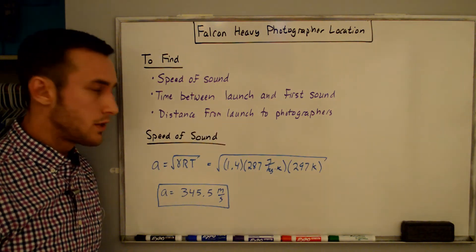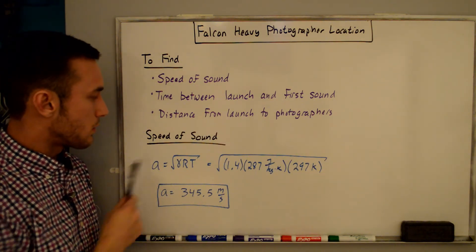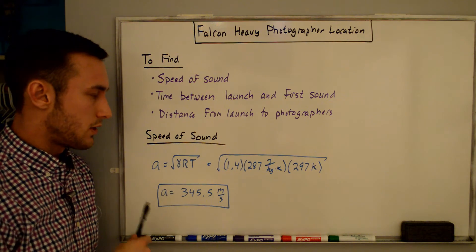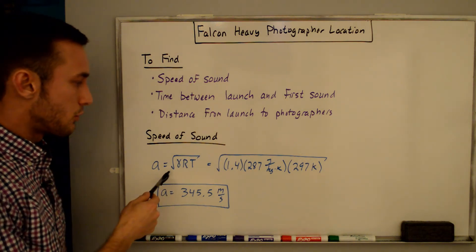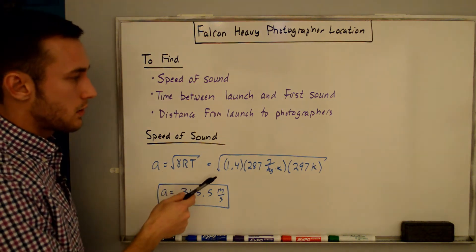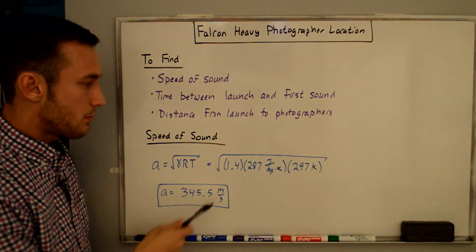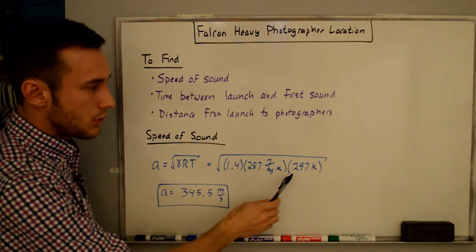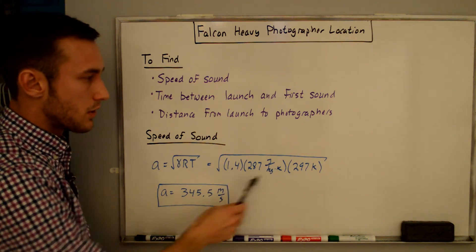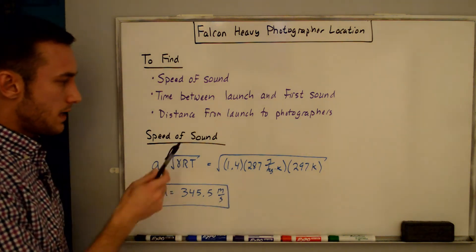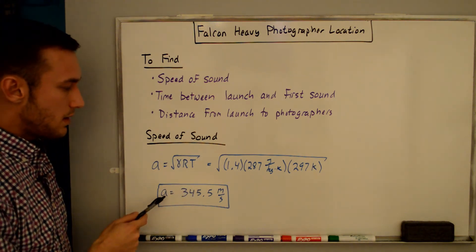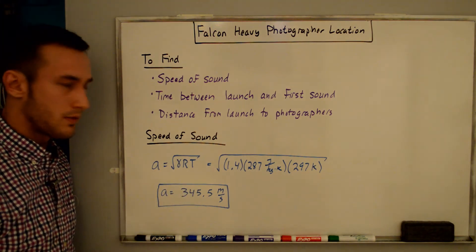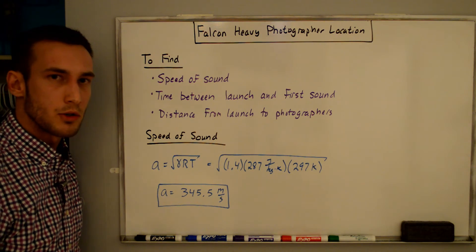Here's the equation for the speed of sound: a is equal to the square root of gamma R T. I have a derivation video for this if you're interested in where this comes from. We just plug in those values — 1.4, 287 joules per kilogram Kelvin, 297 Kelvin — make sure the units are consistent, take the square root, and we get that the speed of sound at sea level for this launch is 345.5 meters per second.